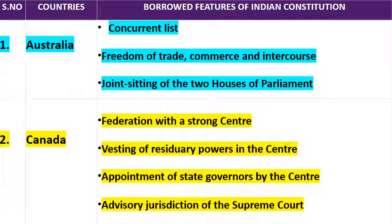Next आता है Vesting of Residuary Powers in the Centre। Residuary power — अवशिष्ट विधायी शक्तियां — means अगर कोई ऐसा subject है जो ना तो Centre List में mention है, ना ही State List में, और उस पर law बनाना है, तो वहाँ पर जो residuary statutory power है, अवशिष्ट विधायी शक्ति, उस पर law बनाने की power Centre को है। यह provision Canada से लिया गया है।